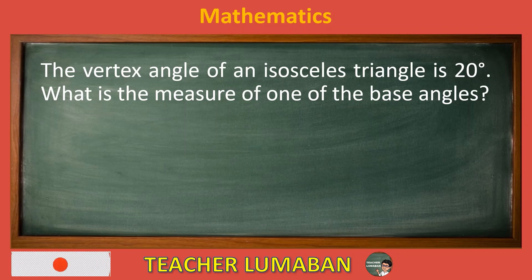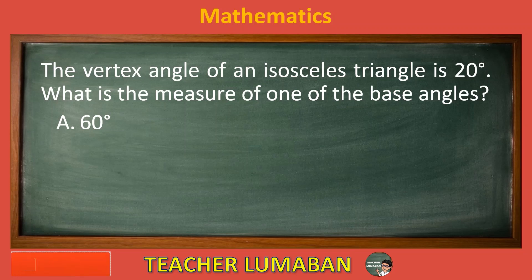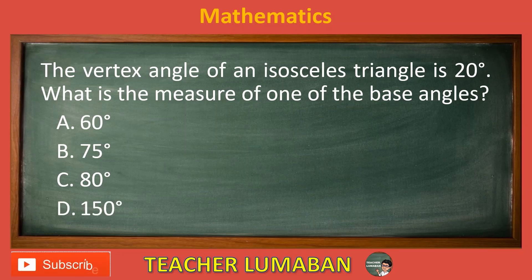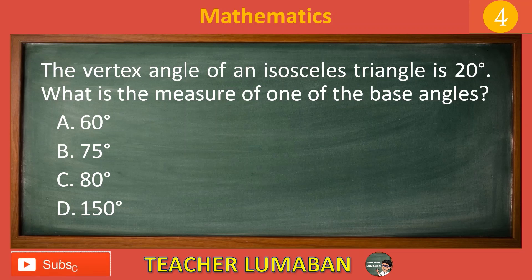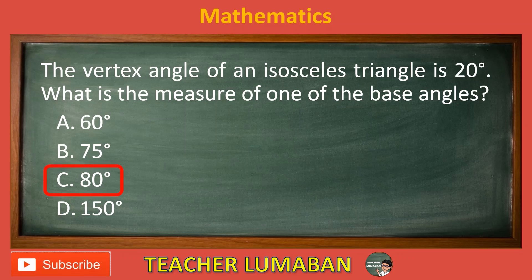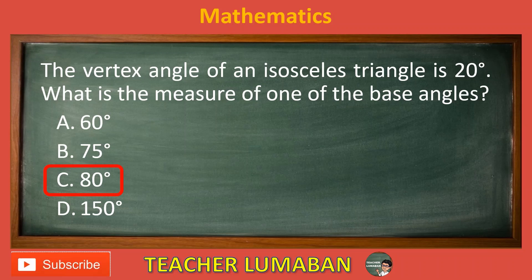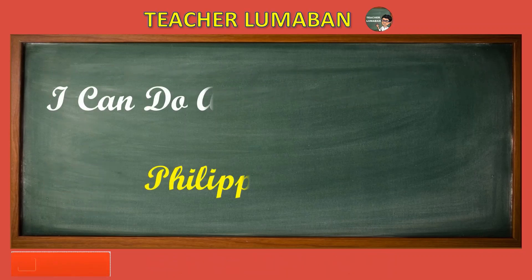The vertex angle of an isosceles triangle is 20 degrees. What is the measure of one of the base angles? Letter A: 60 degrees. Letter B: 75 degrees. Letter C: 80 degrees. Letter D: 150 degrees. The correct answer is letter C, 80 degrees. The measure of one of the base angles is 80 degrees.